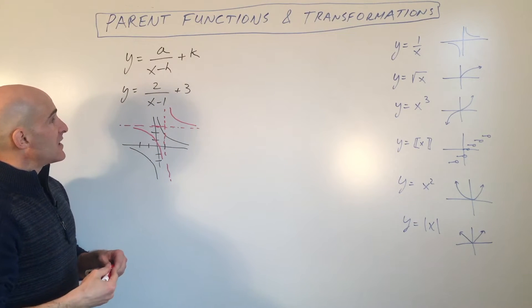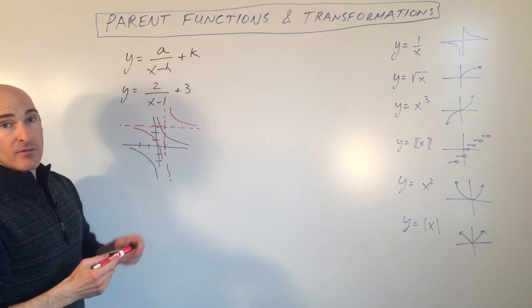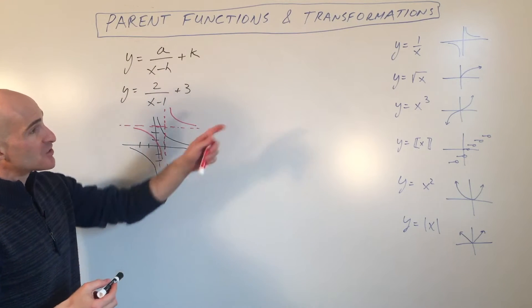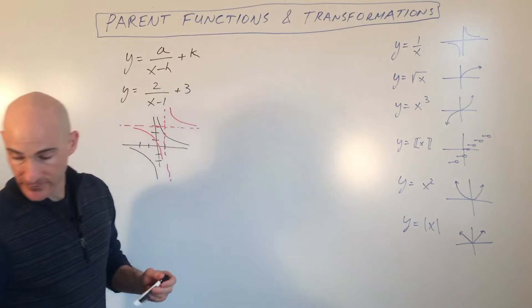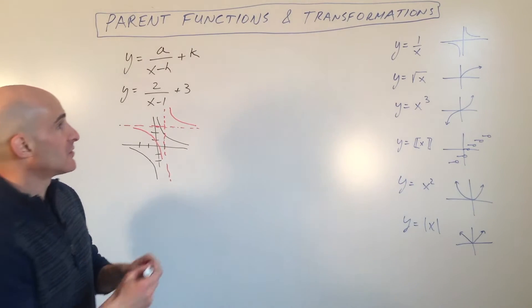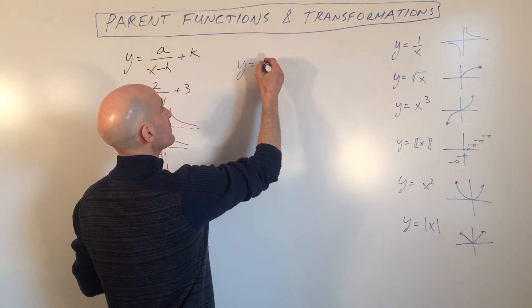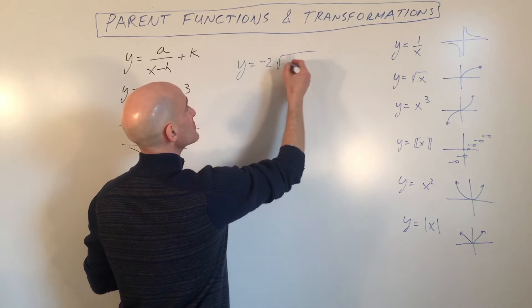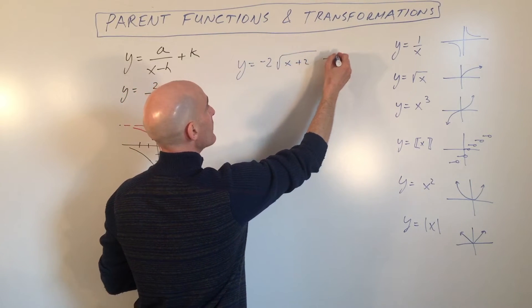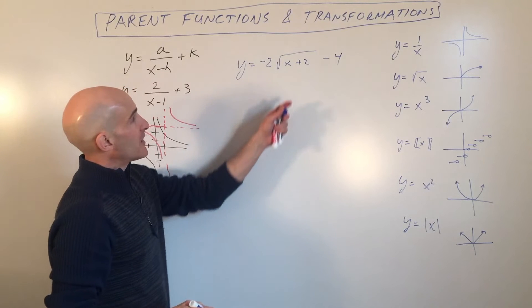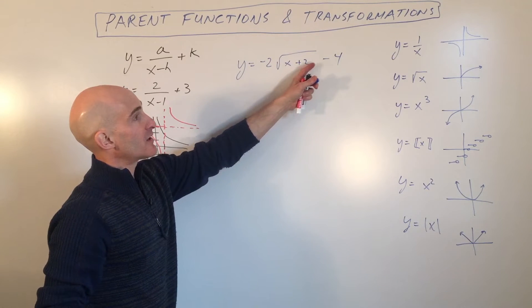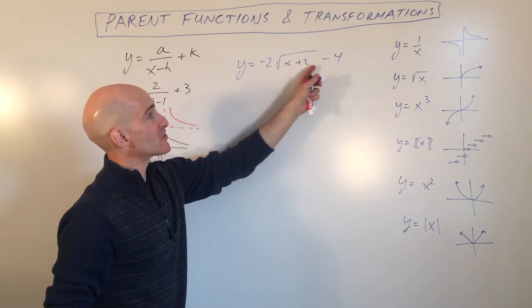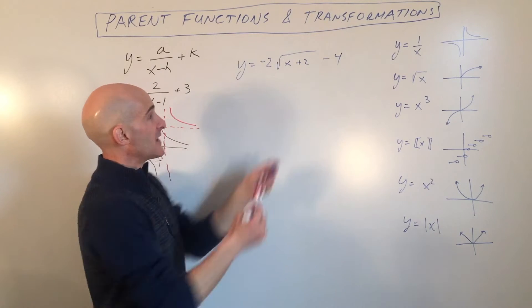So that's the reciprocal function. Let's look at the square root function. Say we wanted to graph y equals negative 2 square root of x plus 2 minus 4. So what you can do is you can take a look at the translation here. So this is going to shift left 2 and down 4.